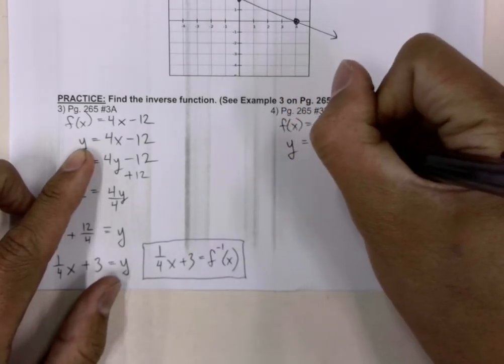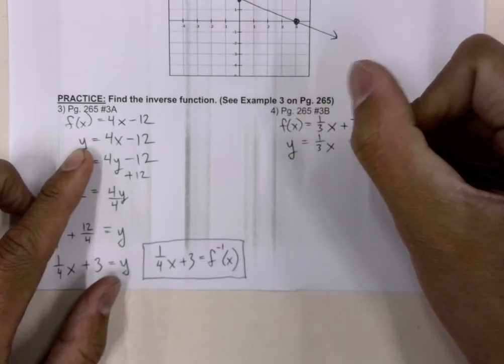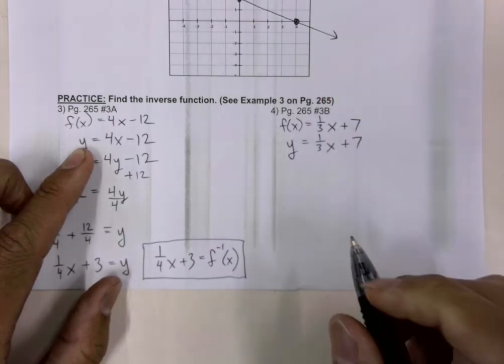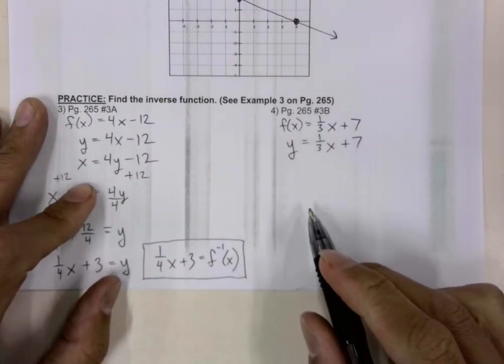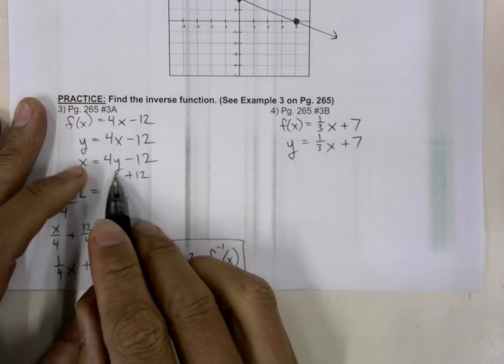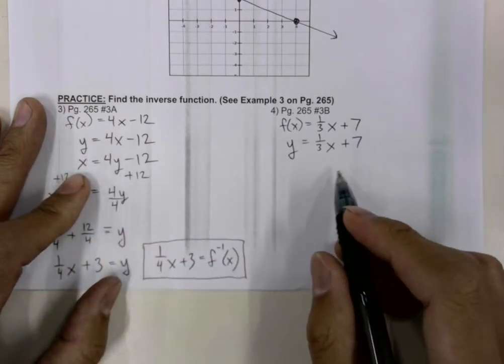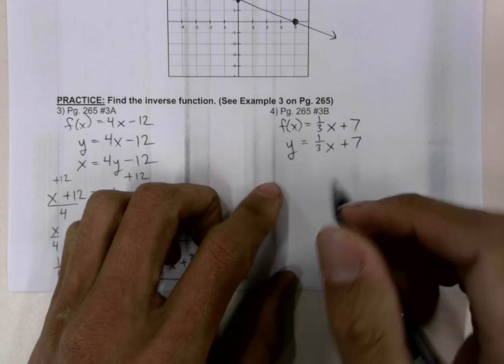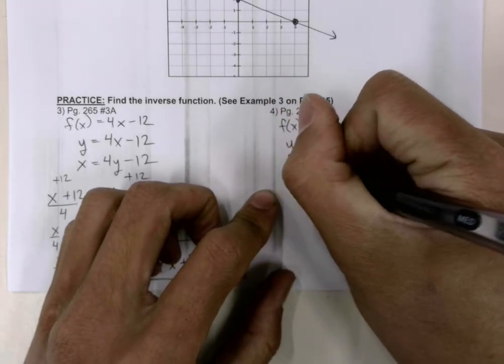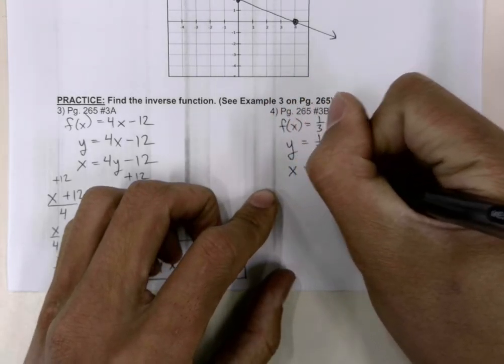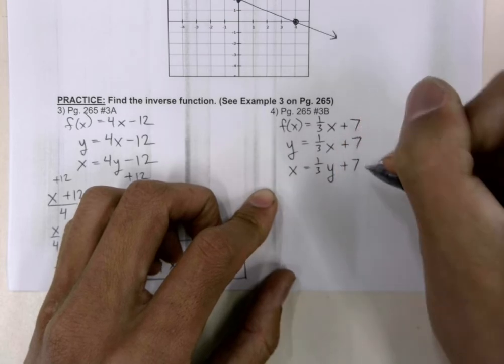And we'll get y is equal to 1 over 3x plus 7. Second step is we're going to switch our x and y values. So we're going to write an x for y and a y for x like so.